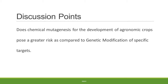Some of the discussion points you can include are: does chemical mutagenesis for the development of agronomic crops pose a greater risk as compared to genetic modification or specific targets? Thank you for watching this open educational resource. As mentioned earlier, this resource is developed under the Creative Commons licensing and you are free to download, reuse and remix this resource.